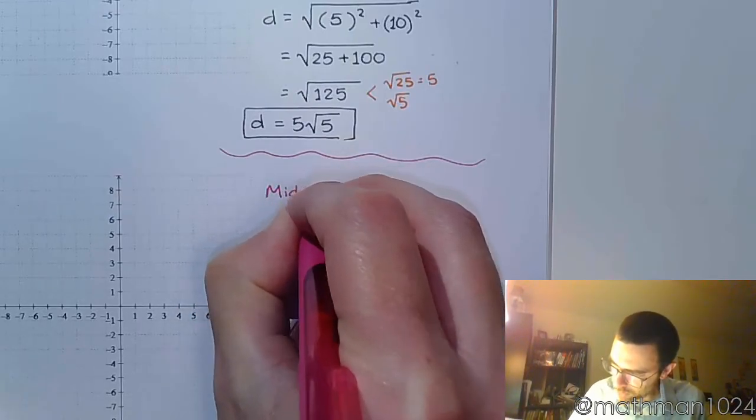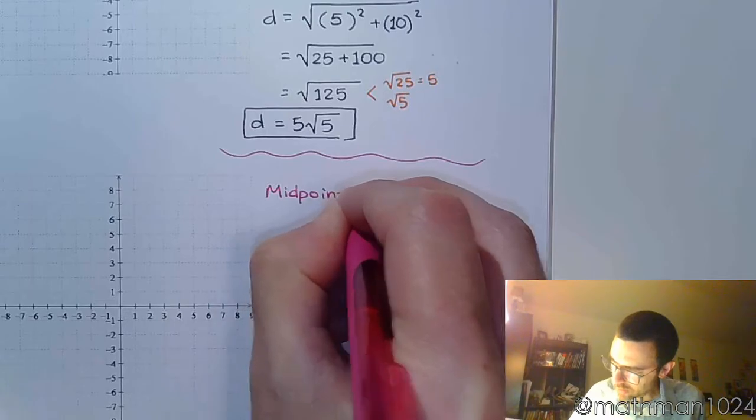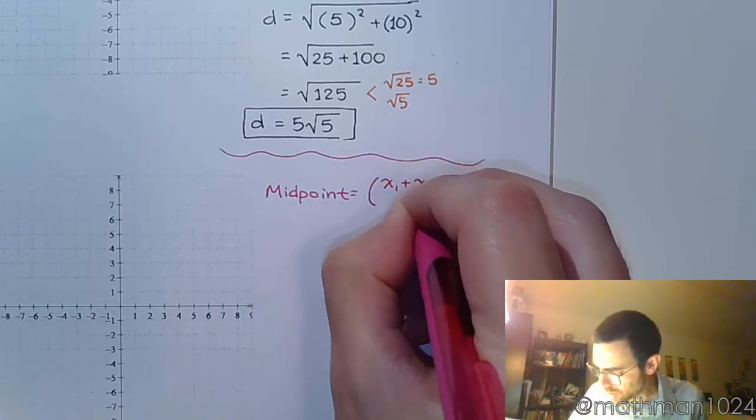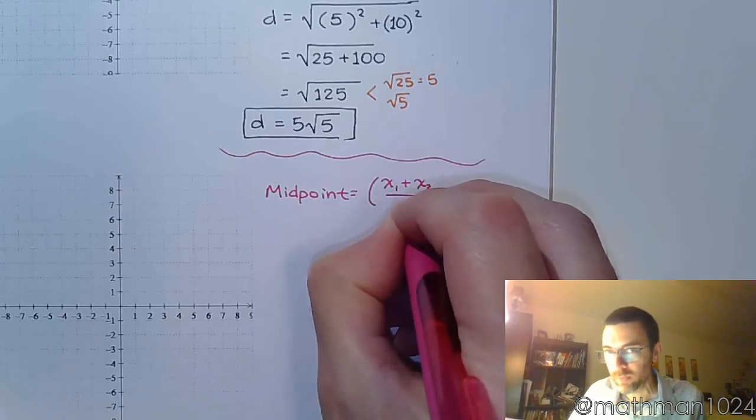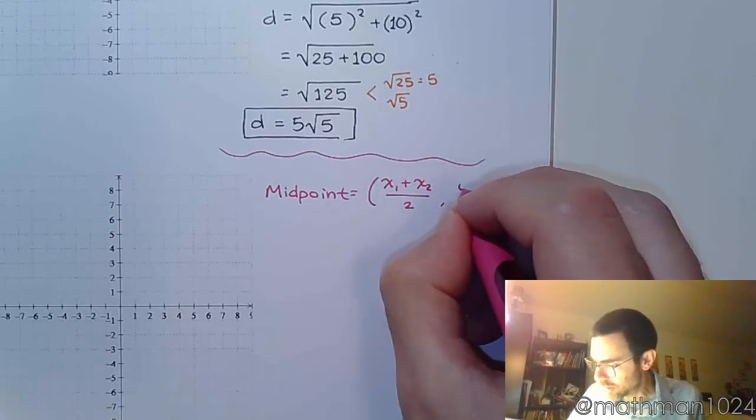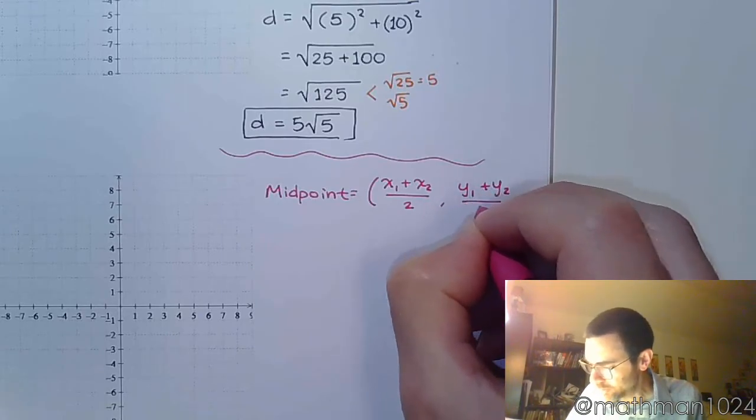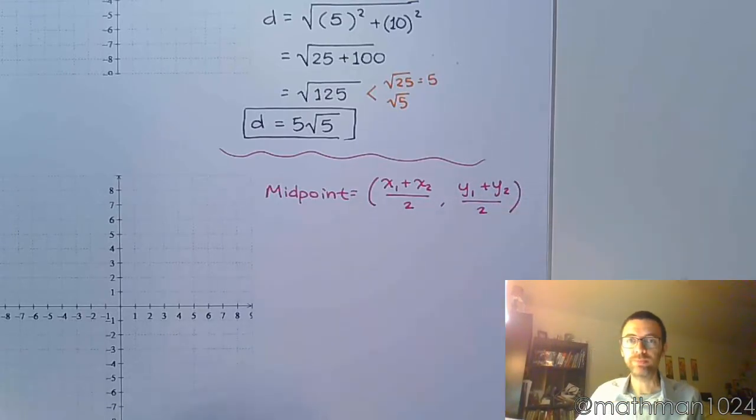So for your midpoint, we're going to have this. The formula for your midpoint is going to be x1 plus x2 over 2, and then y1 plus y2 over 2. You're just going to do the average of each of these.